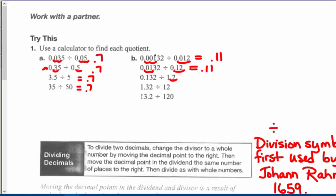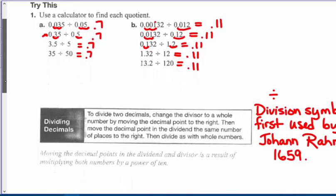Again, I get 1.32 divided by 12, which is eleven-hundredths. 13.2 divided by 120 — guess what? It's also eleven-hundredths. I don't need a calculator; you can verify it if you like. I'm doing it mentally by converting my divisors to whole numbers.